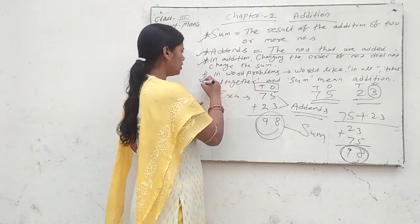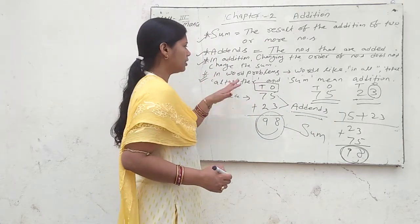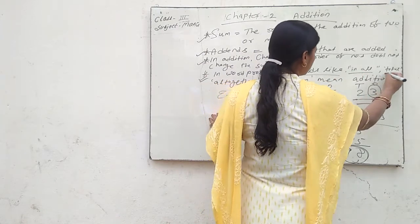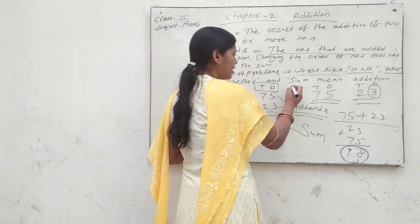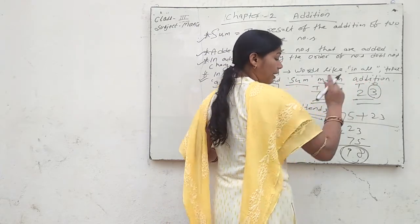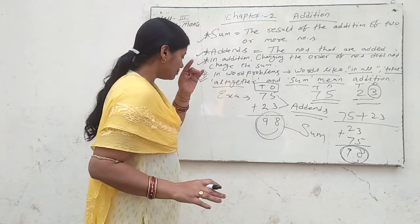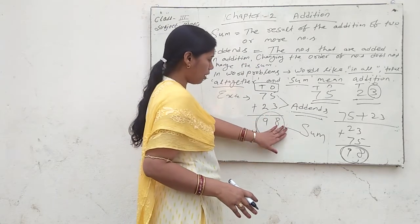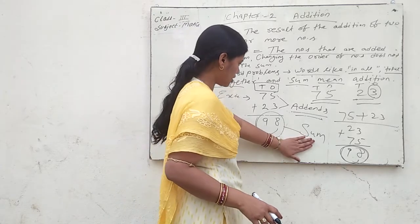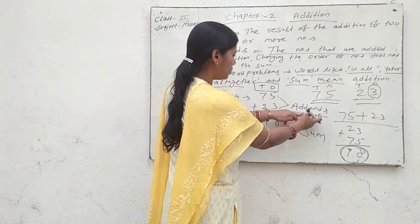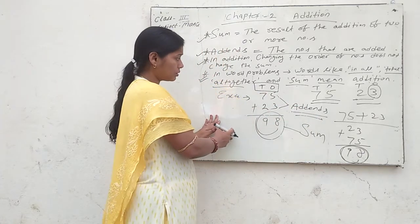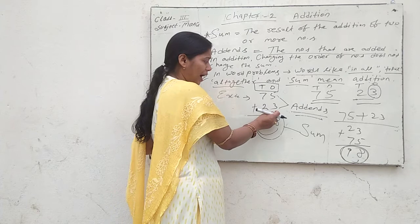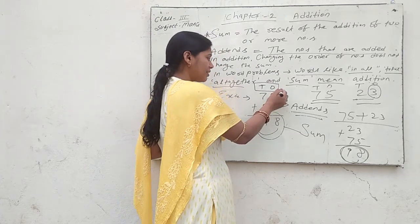Now we will discuss the last point. In word problems, the key words that indicate addition are: 'in all,' 'total,' 'altogether,' and 'sum.' Once again, to recap: the result of addition is called the sum, and the numbers that are added are called addends. The basic rule for addition is to first place your digits according to their place values, then add from right to left.